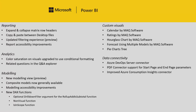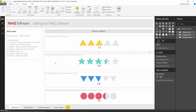The second visual is Ratings by MAQ Software. This is all around being able to show some kind of indicator of the current rating of something — like three out of five stars for a movie, or any situation where things have a rating applied to them. You can now visualize it with this custom visual.